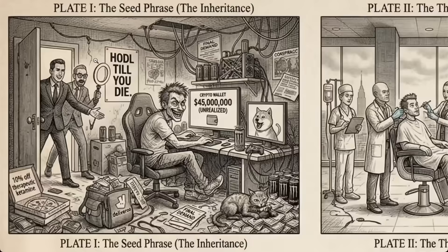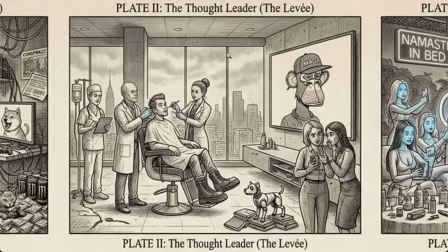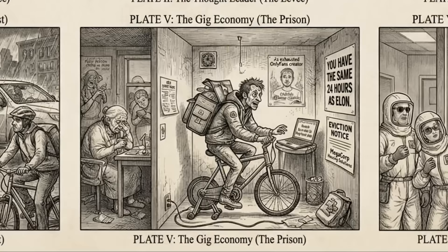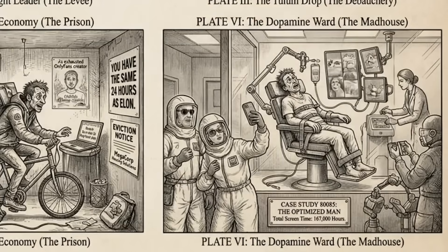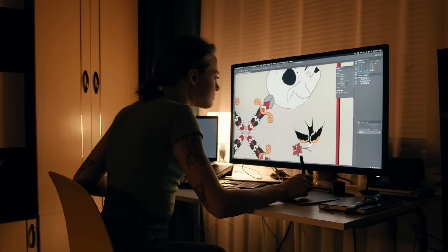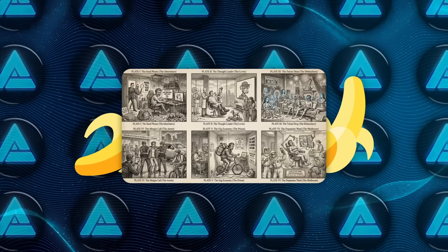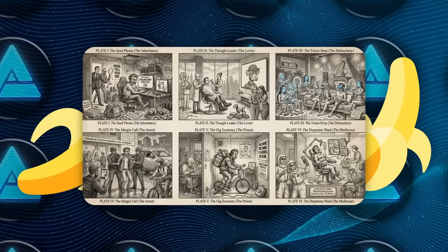You see the guy getting rich through Dogecoin, monster energy cans everywhere, an old Deliveroo job, therapeutic ketamine ads, NFT phases, life extension experiments, a gig economy, prison, OnlyFans burnout, a megacorp eviction notice, and finally a dopamine ward as the modern version of the madhouse. Every panel looks like something an illustrator would spend days refining, and Nano Banana Pro just drops it in seconds with the same consistency across the entire sequence.